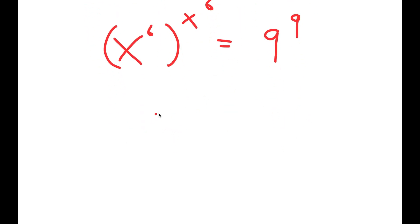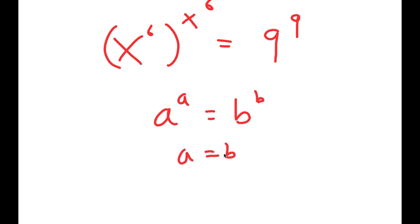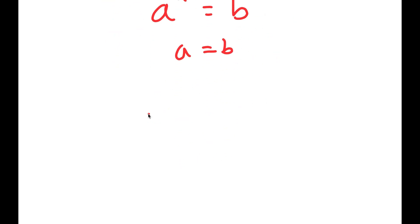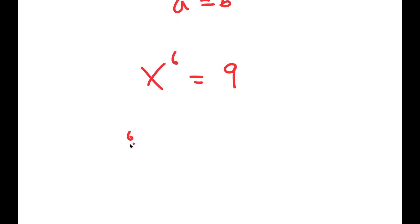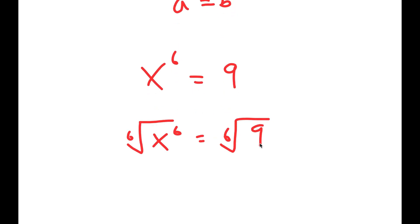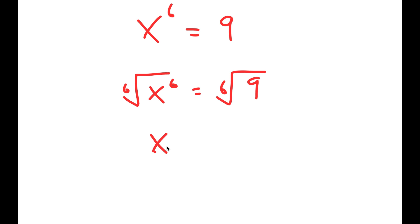Because this is in the form a to the power of a equals b to the power of b, this means a equals b. So in this case, x to the power of 6 is equal to 9. Taking the 6th root on both sides, I get x is equal to the 6th root of 9.